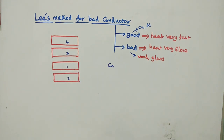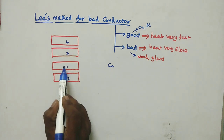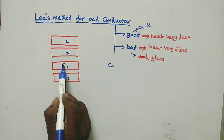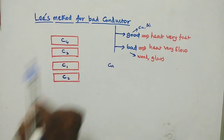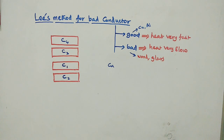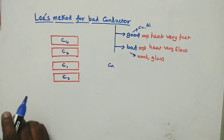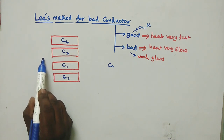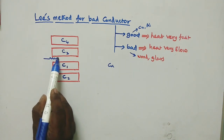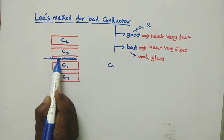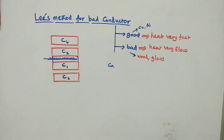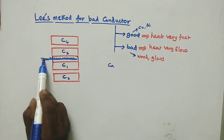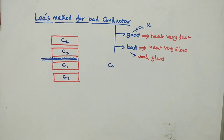Copper is a good thermal conductor, so the discs are copper discs labeled C1, C2, C3, and C4. The setup includes a preheated heat source that has been connected to an electrical circuit.